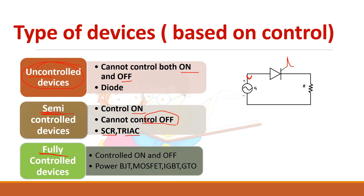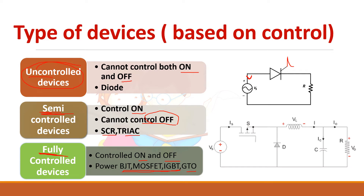Next is the fully controlled device, meaning you can control both the on and off process. Examples include all transistor devices — BJT, MOSFET, IGBT — and GTO (gate turn-off thyristor). For GTO, if you give a positive pulse it will conduct; if you give a negative pulse it will stop conducting. For transistors, if you apply a gate signal it will conduct; if you remove the gate signal it will switch off. For MOSFET, if you give a gate pulse it turns on and if you remove the gate pulse it turns off — so it is a fully controlled device.